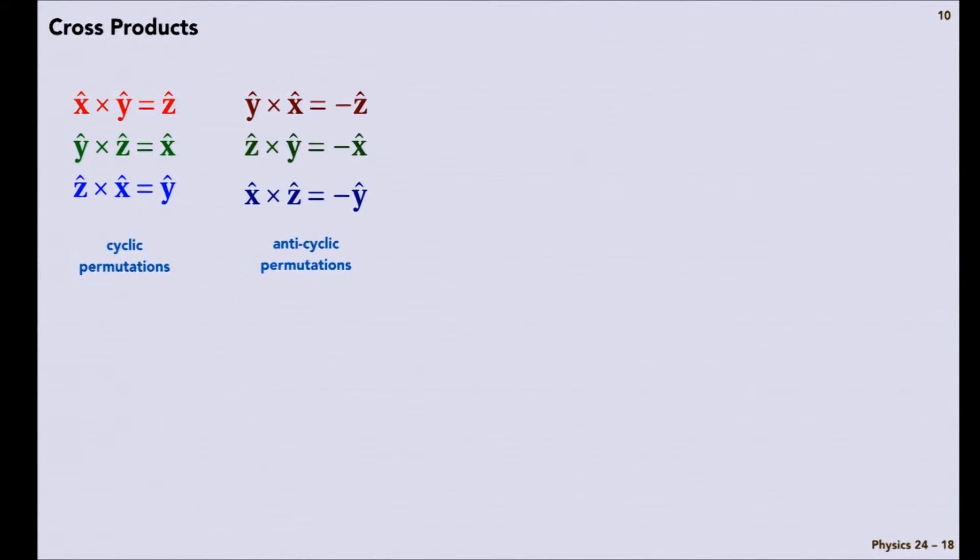So an important property of the cross product is that it's not commutative. Exchanging the order gives you a minus sign. A cross B is minus B cross A. Same general direction, but in the opposite sense for the cross product.